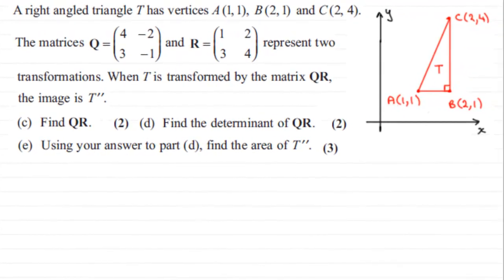Hi. Now what we have here is a right angle triangle T with vertices A at (1,1), B at (2,1), and C at (2,4), and I've just sketched it out here.